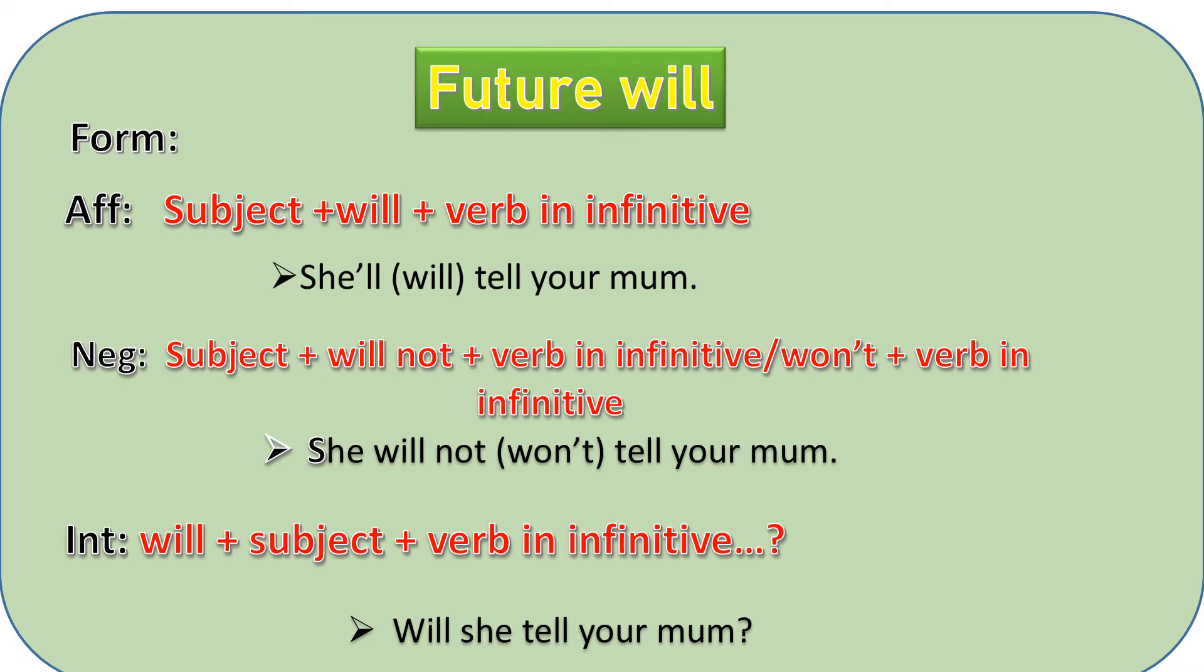Let's start with future will. The affirmative form is subject plus will plus verb in infinitive. Example: She will tell your mom. Negative: subject plus will not plus verb in infinitive, or won't in the contracted form plus verb in infinitive. Example: She won't tell your mom. Interrogative: will plus subject plus verb in infinitive. Example: Will she tell your mom?